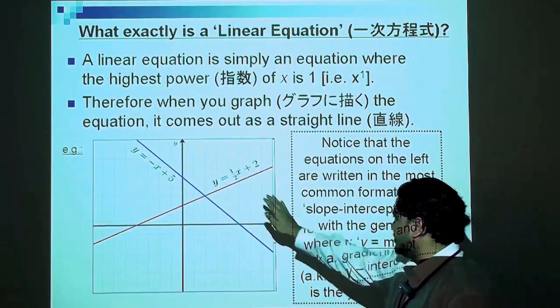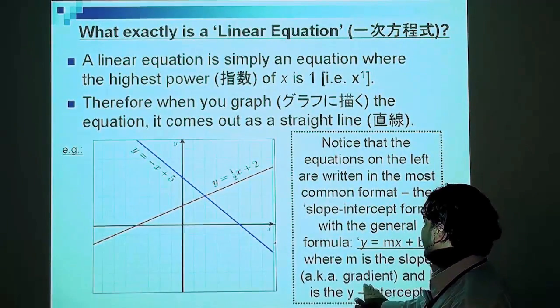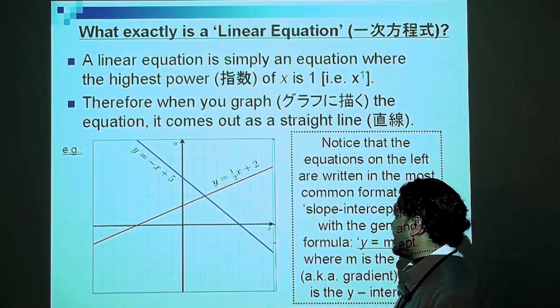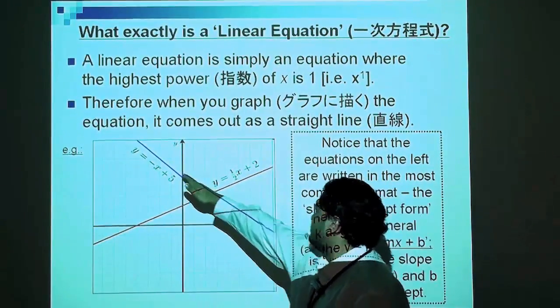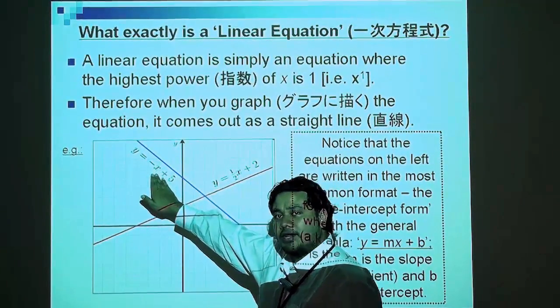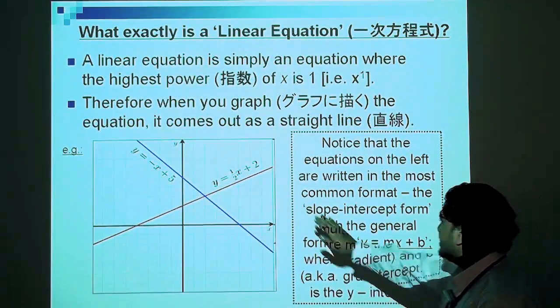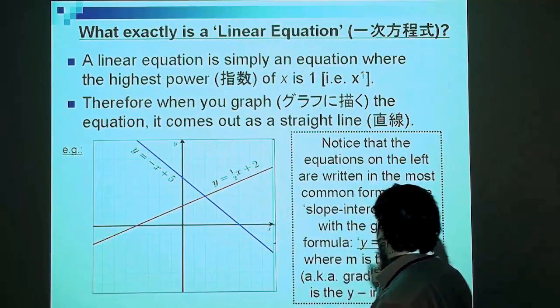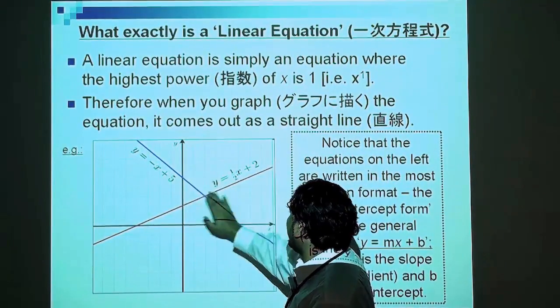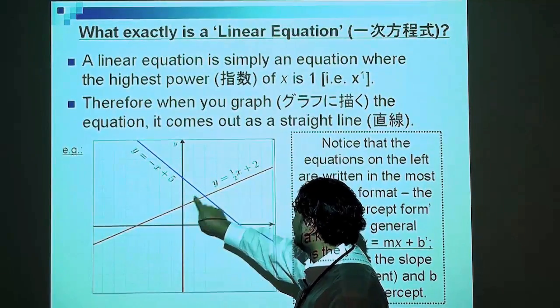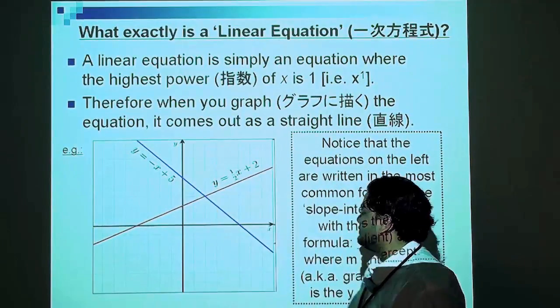The coefficient of x, that number, is the slope or gradient. The slope of this red line is 1/2, and the slope of this blue line is negative 1. Another thing you should notice is the y-intercept. This line will cross the y-axis at positive 2, and this will cross the y-axis at positive 5, at that point there.